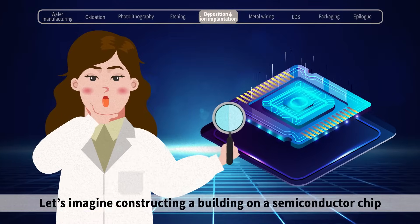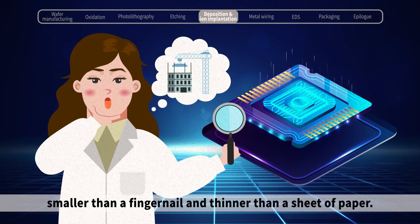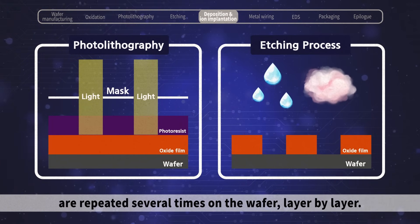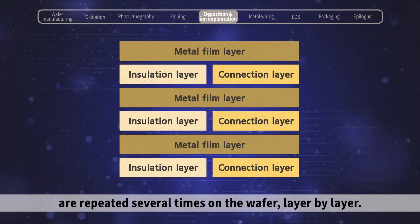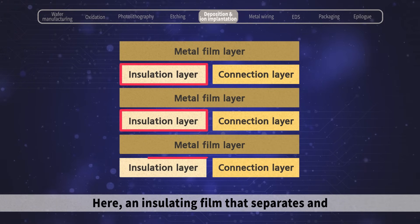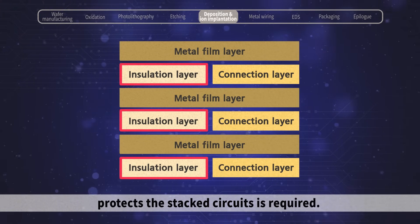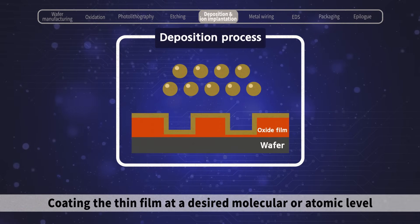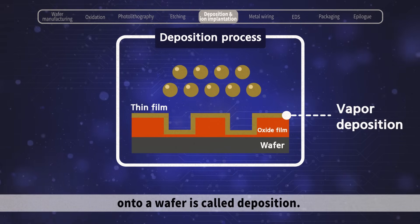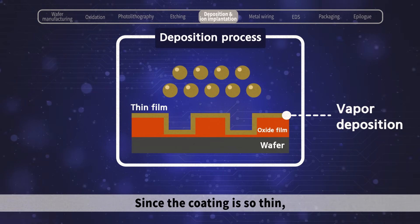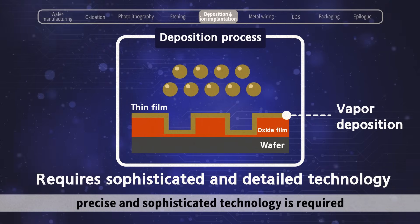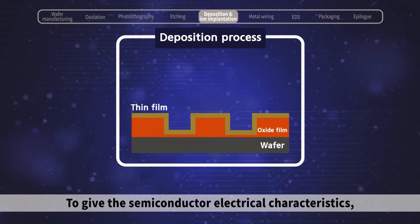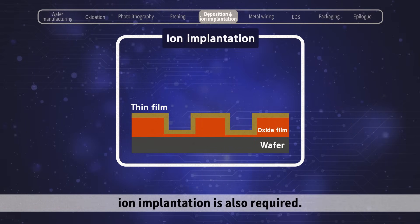Let's imagine constructing a building on a semiconductor chip smaller than a fingernail and thinner than a sheet of paper. The photolithography process and the etching process are repeated several times on the wafer, layer by layer. An insulating film that separates and protects the stacked circuits is required — it is called a thin film. Coating the thin film at a desired molecular or atomic level onto a wafer is called deposition. Precise and sophisticated technology is required to uniformly apply the thin film on a wafer. To give the semiconductor electrical characteristics, ion implementation is also required.